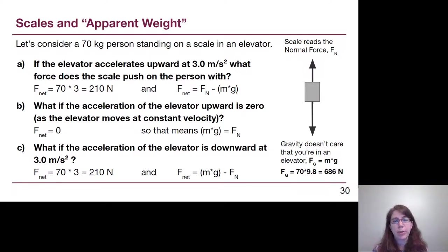If the elevator is accelerating upward at 3.0 m/s², what force does the scale push on the person with? The net force is mass times acceleration, 70 times 3 is 210 newtons. And in order to figure out what that net force looks like in terms of the forces that we have, it's the force in the direction of motion, the normal force, minus the force opposite the direction of acceleration, gravity.